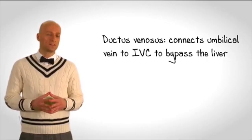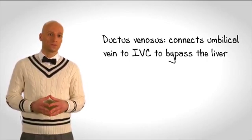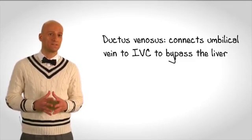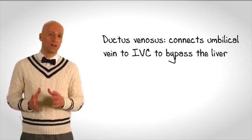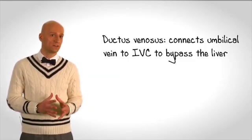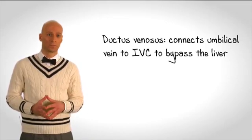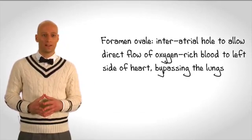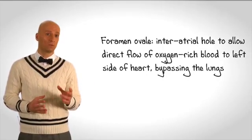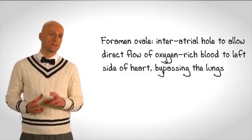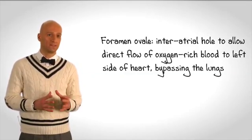Now, in the adult, blood that is in the right atrium would pass into the right ventricle and then would pass through the lungs. But remember, in the fetus the lungs are not the site of gas exchange, so we want to divert as much of this oxygenated blood away from the underdeveloped lungs as possible. One structure that allows for this is what's known as the foramen ovale. The foramen ovale is a round hole that sits in the wall that separates the right atrium from the left atrium.